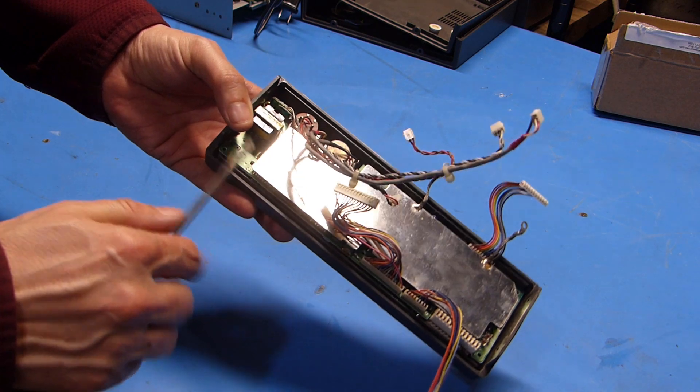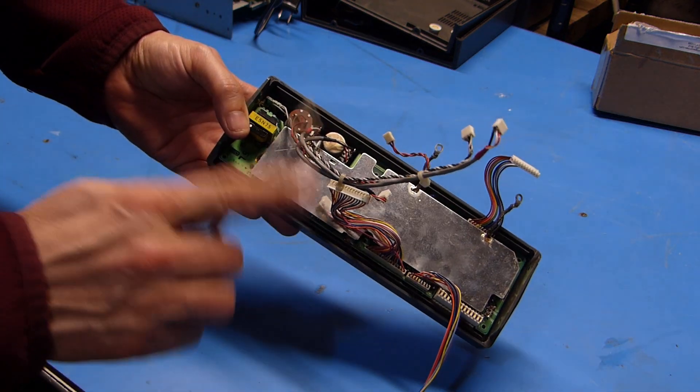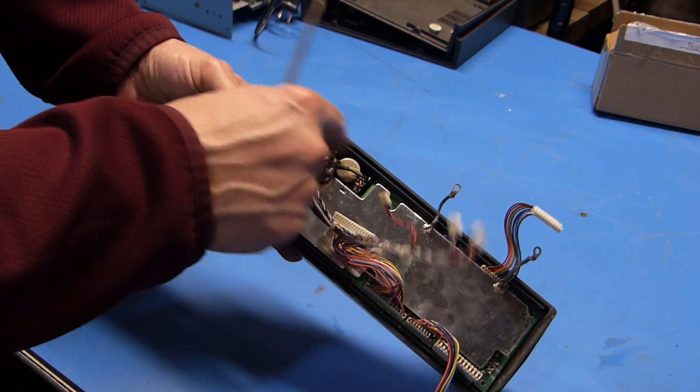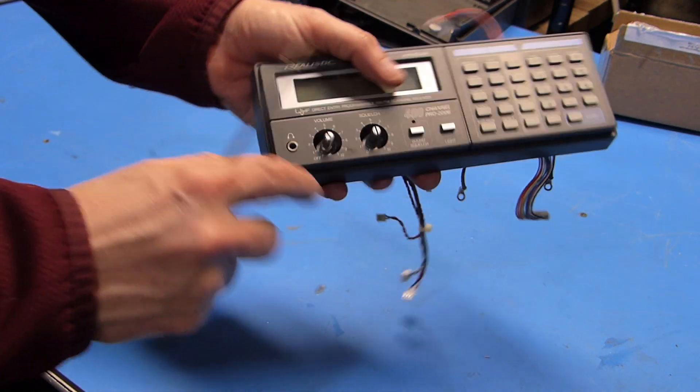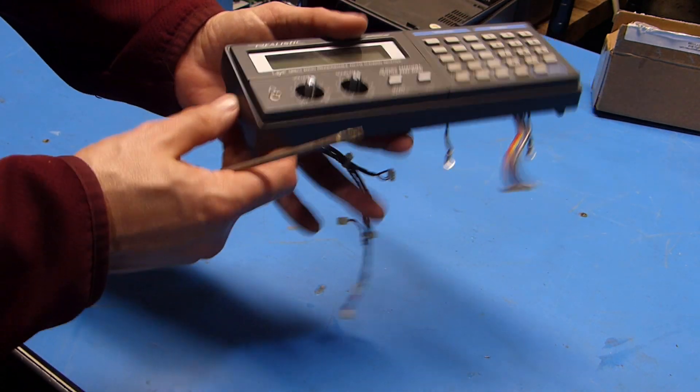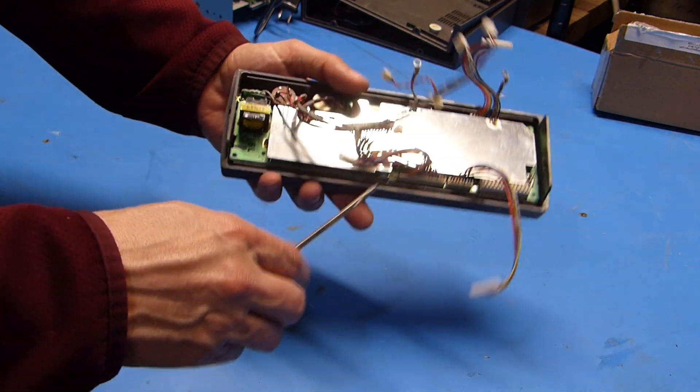And one thing to note is that the volume and squelch controls are on a separate board and they're actually kind of bolted into the plastic but I don't think we need to remove those. I'm going to leave them just the way they are and just work on prying this out.